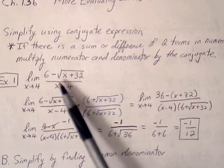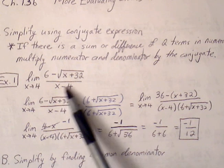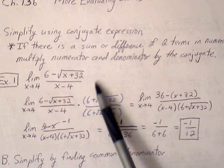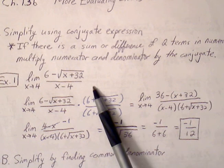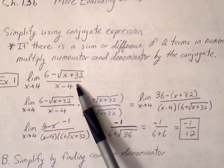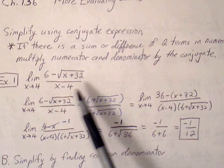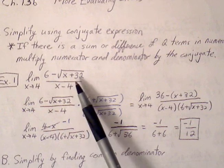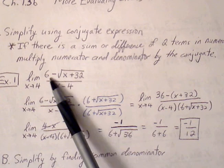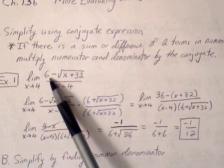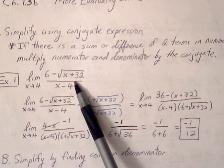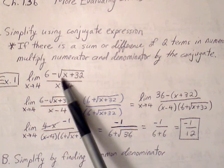6 minus 6 is 0. Plugging 4 in for x in the denominator, we get 4 minus 4, which is 0. Now 0 over 0 indicates that we can do something further to simplify the expression. In this instance, we can identify the conjugate for the numerator that has the square root.